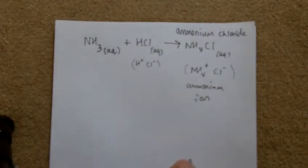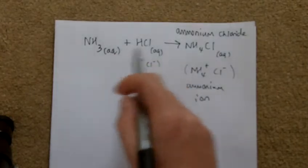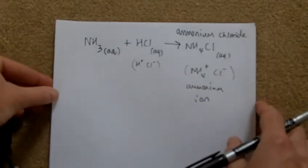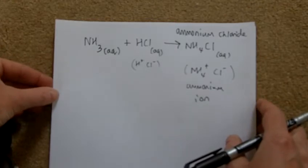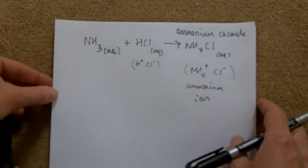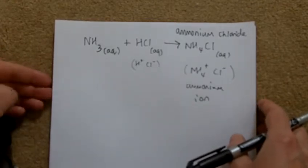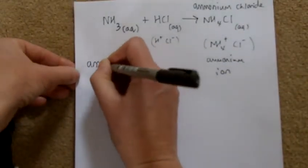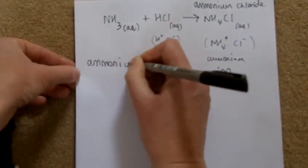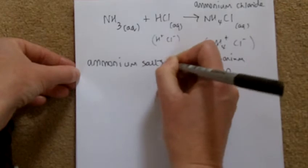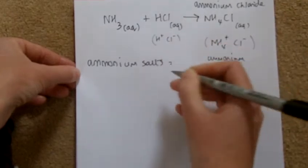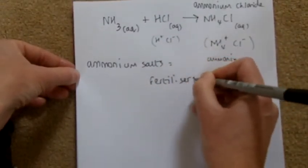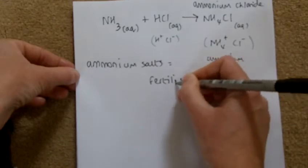Ammonium chloride is balanced. It's a salt made from an acid and a base. Ammonium salts are industrially very important — they are used as fertilizers.